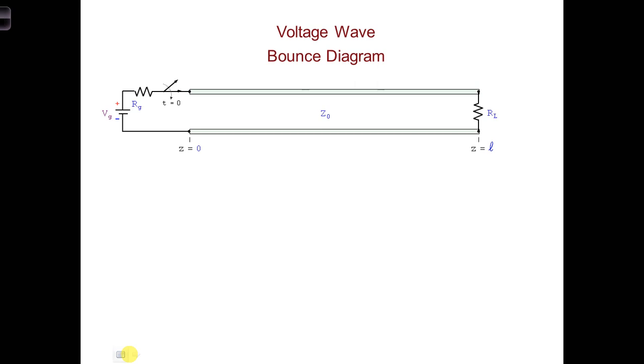This is something we can do with what's called a bounce diagram. Bounce diagrams are useful for keeping track of the leading edge of all the different propagating signals. They are also helpful for predicting how the voltage and current will change over time at any particular point on the transmission line.